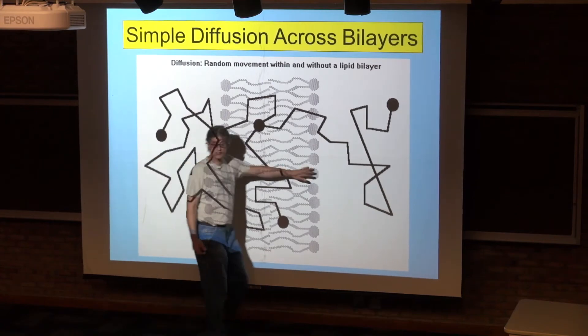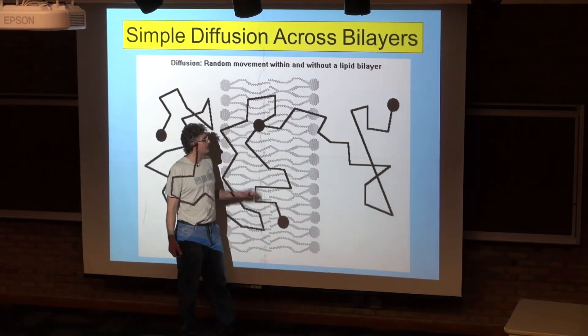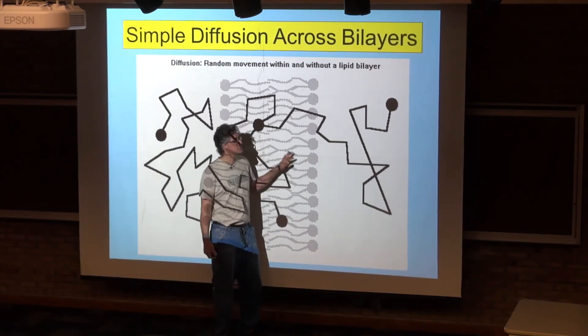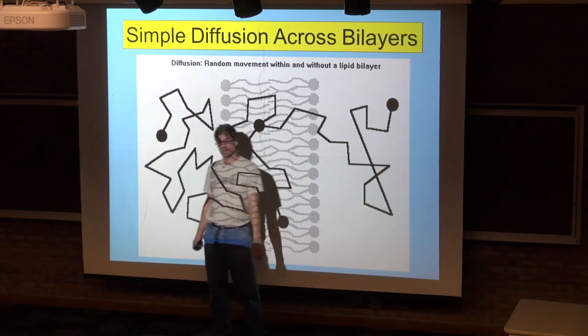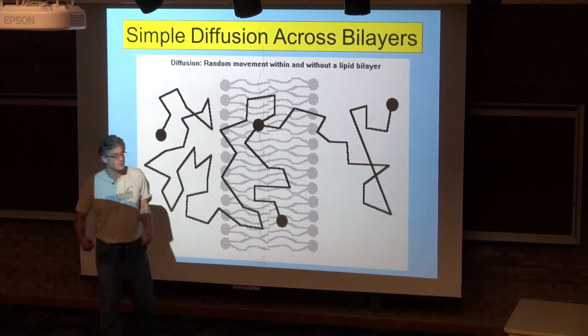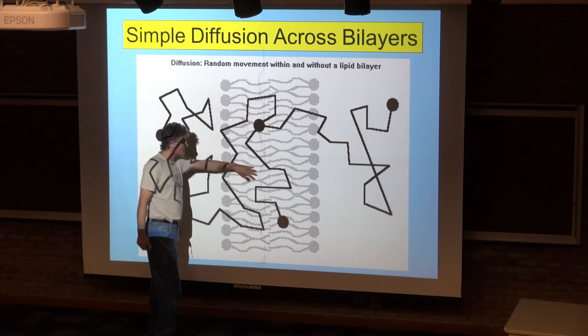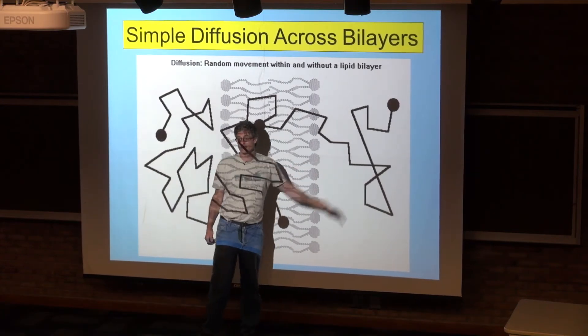Could be this side, could be this side. And when that collision occurs, at some rate, they're going to be able to exit the lipid bilayer. Now if it's a small and hydrophobic substance, the rate at which they enter the lipid bilayer is going to be much higher than the rate at which they exit it.